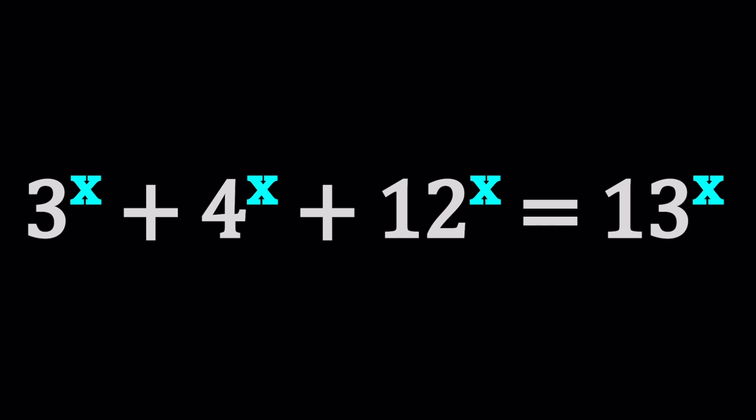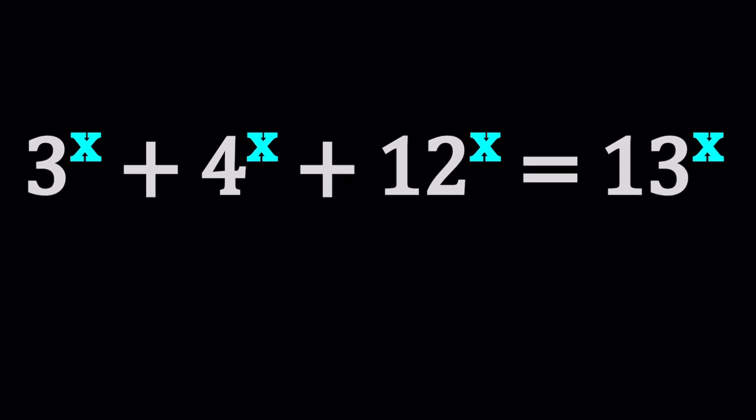In this equation, you need to realize that the left-hand side is made up of increasing functions because we have exponential functions whose bases are greater than 1. The same thing happens on the right-hand side. So we have an increasing function equals an increasing function. Now, what happens if x is 0? You get 1 plus 1 plus 1 on one side and 1 on the other side, so the left-hand side is going to be bigger.